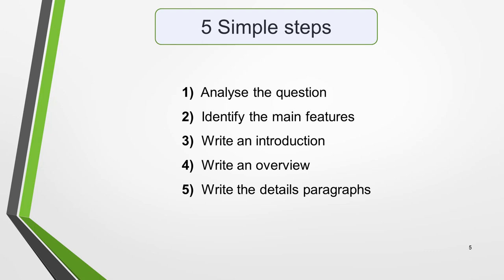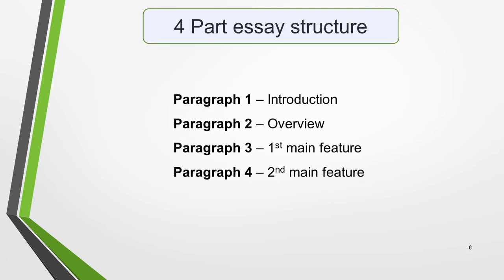There are five steps to writing a good essay for Task 1: analyse the question, identify the main features, write an introduction, write an overview, and write the detailed paragraphs. We'll look at these in more detail in a minute, but first I want to outline an easy-to-remember four-part essay structure. You can use the same basic structure for all Academic Task 1 questions.